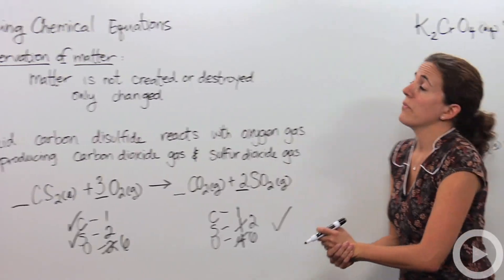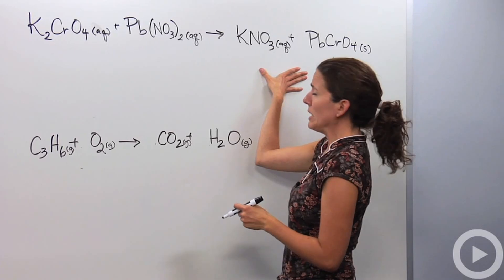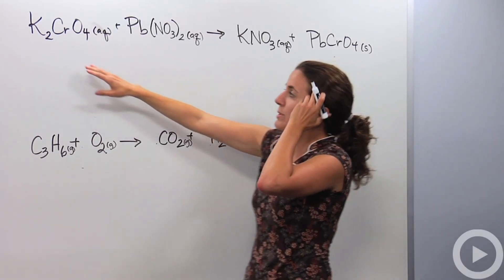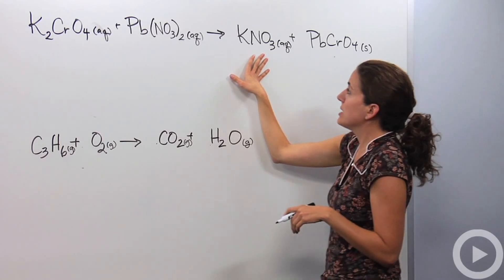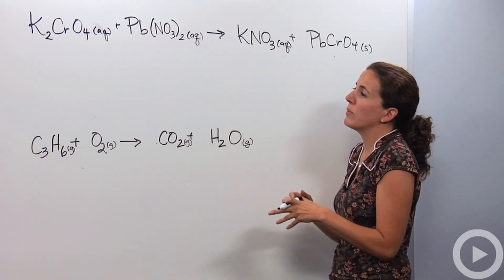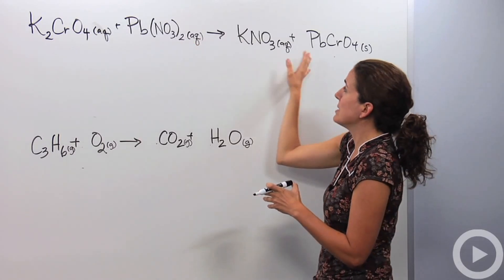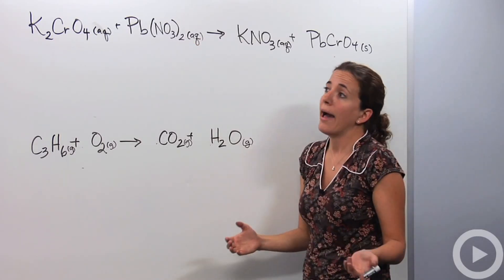Let's do something a little more complicated. Before we dive into this equation, this reaction we have on the board, which is potassium chromate plus lead two nitrate yields potassium nitrate plus lead two chromate. We want to make sure we balance this properly, but there's a lot of atoms in this. So we want to make sure this is easy on ourselves. Before we jump right into it, we should notice a pattern.